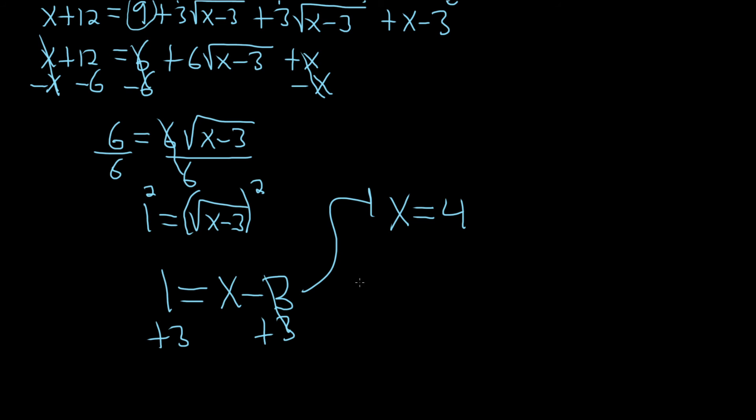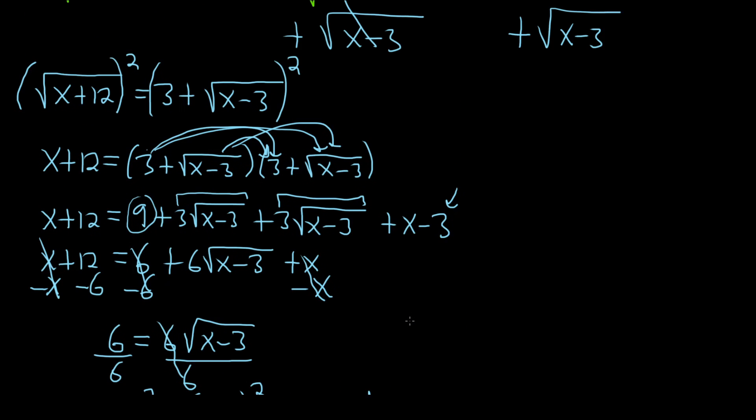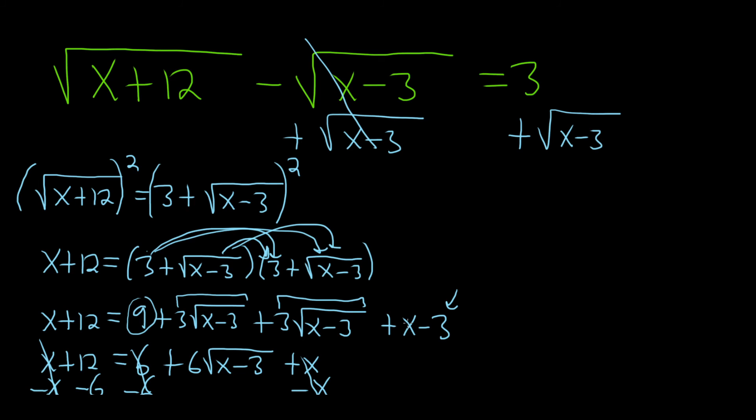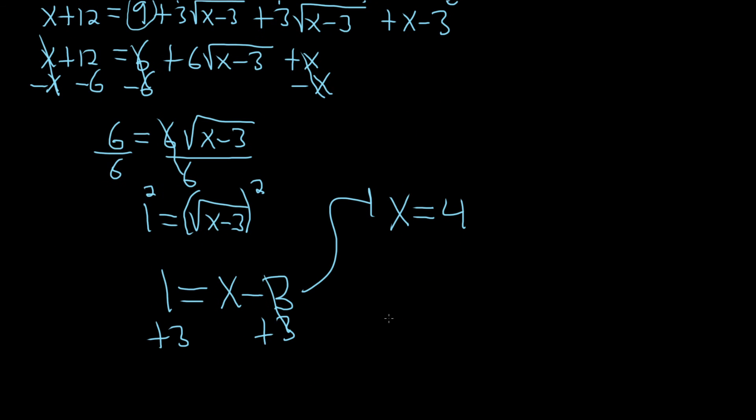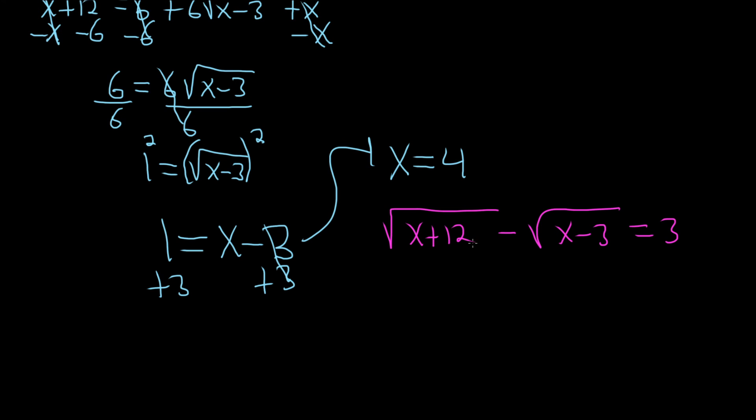Now, is that the answer? Well, honestly, I don't know. We have to check. Whenever you have equations with square roots, it's super important to check. Let me write down the original equation: square root of x plus 12 minus square root of x minus 3 equals 3. When you check, take your value of x and plug it into the original.